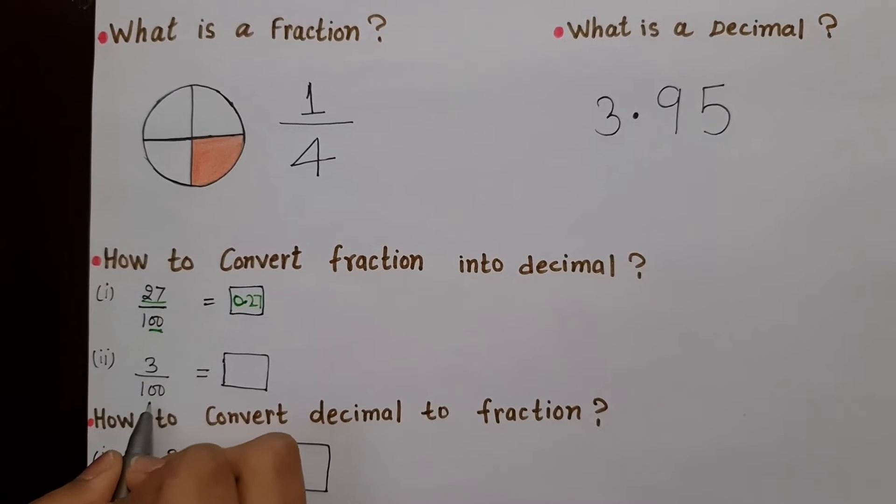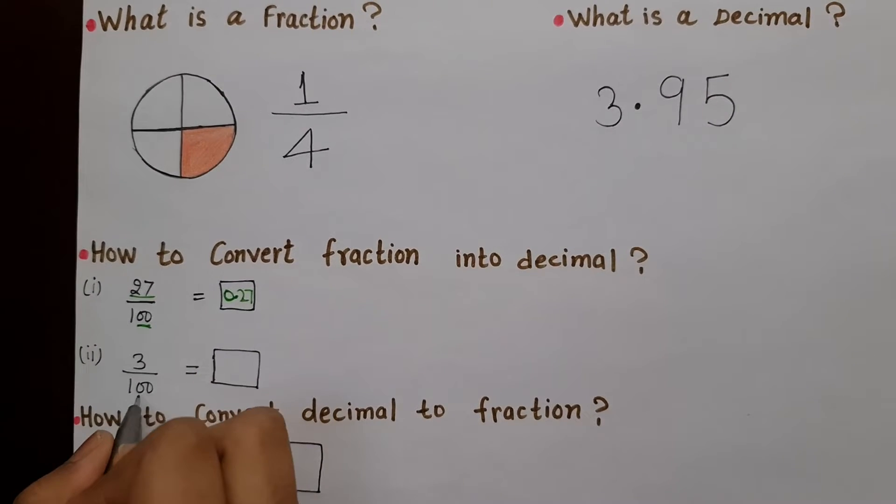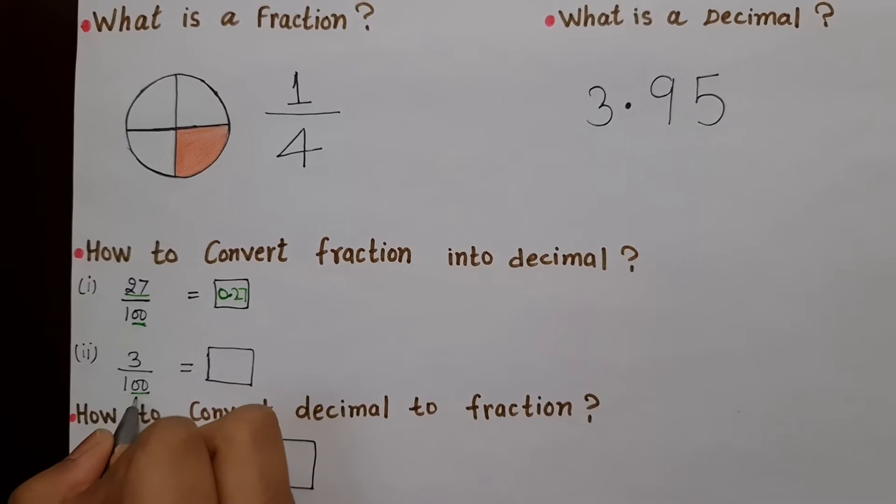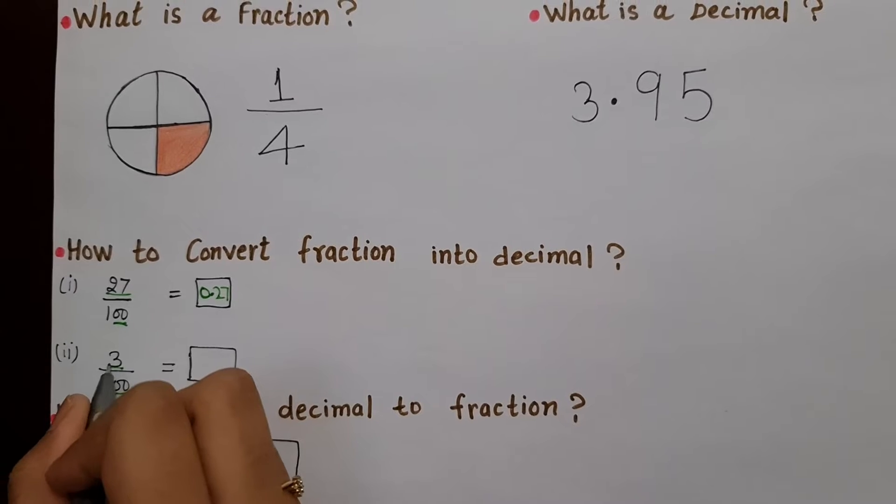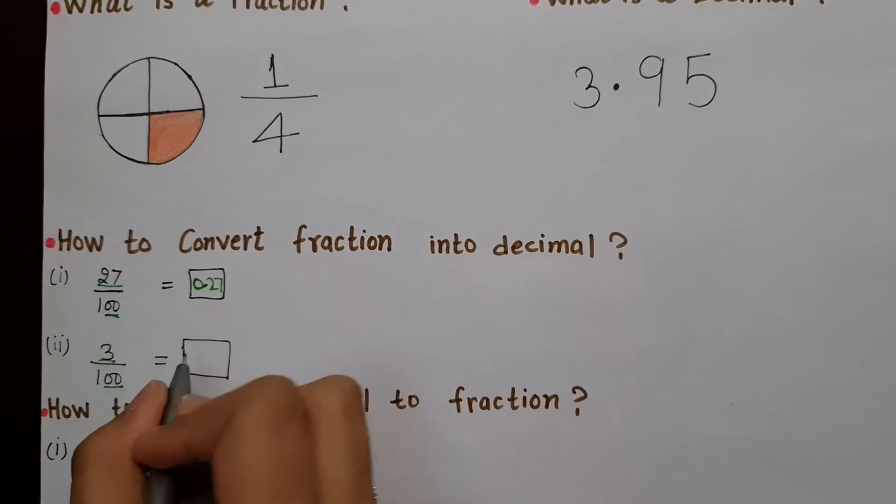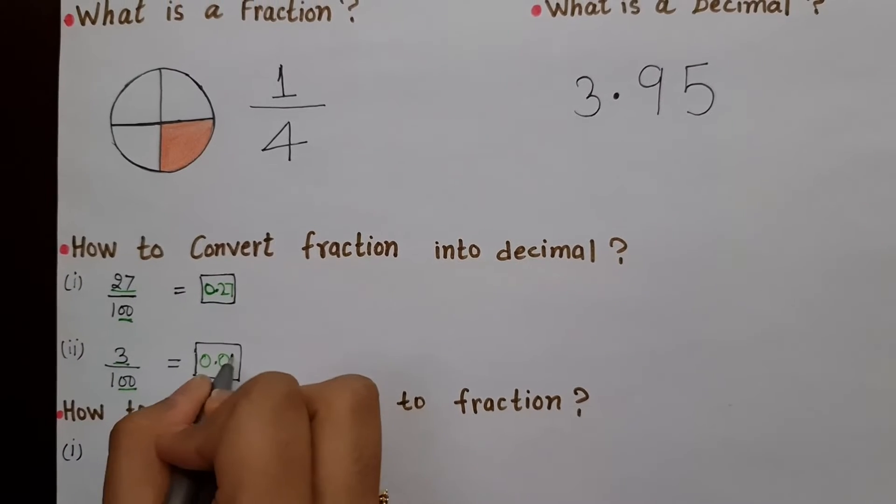3 by 100. Again, we look at the number of zeros, which is 2. And then we look at the number. So when we move the number two steps to the right, it will be 0.03.